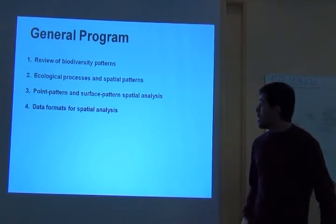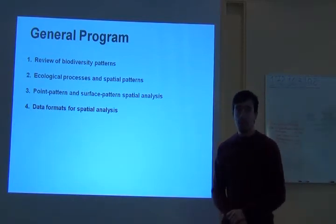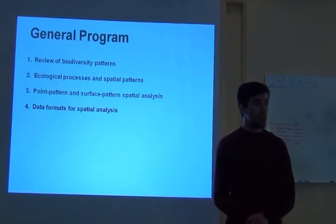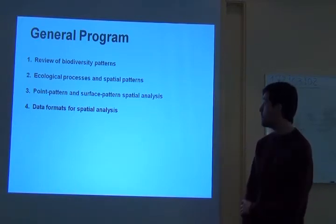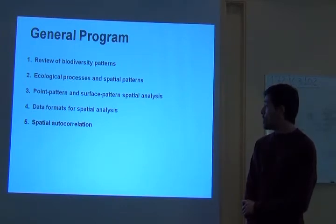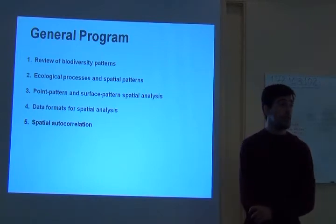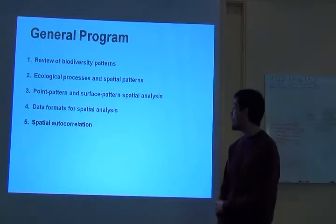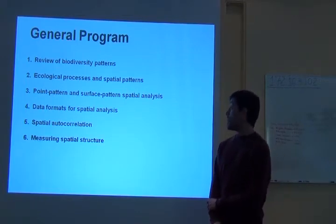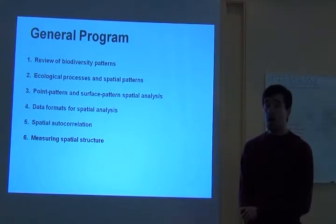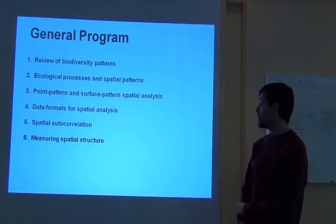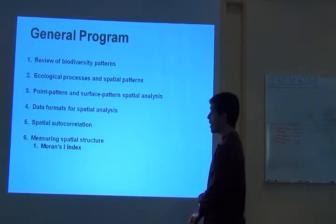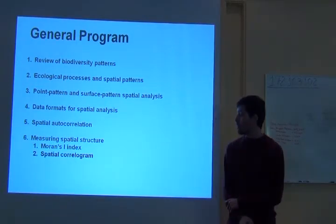Then I'm going to spend a couple of slides on data formats for spatial analysis, because in the afternoon we're going to spend more time opening files and looking at them, making sure we understand what formats the software expects. And then we're going to talk about spatial autocorrelation, which is a fundamental concept in geographical analysis of ecological data. Then we're going to talk about how we can measure the amount of spatial autocorrelation or spatial structure in a given dataset — specifically something called the Moran's I index and the spatial correlogram.